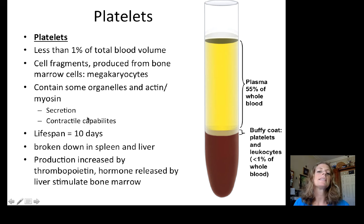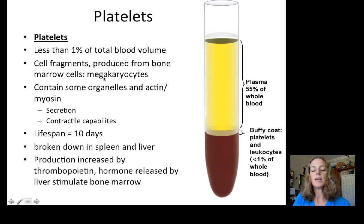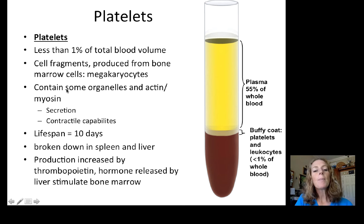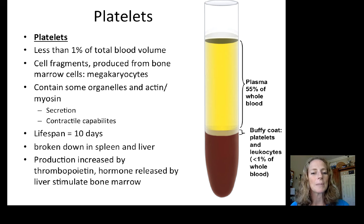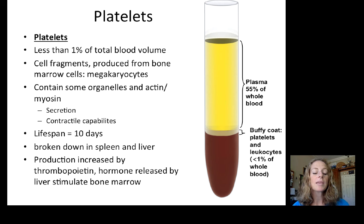Platelets are less than 1% of total blood volume. They are technically not complete cells — they are fragments produced from very large bone marrow cells called megakaryocytes; little chunks of megakaryocytes break off to form platelets. Though they look like dust on a microscope, they contain organelles and also contain actin and myosin, giving them contractile capabilities. Their lifespan is very short, about 10 days.